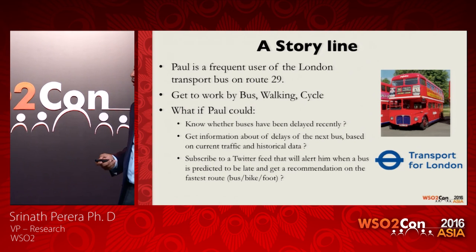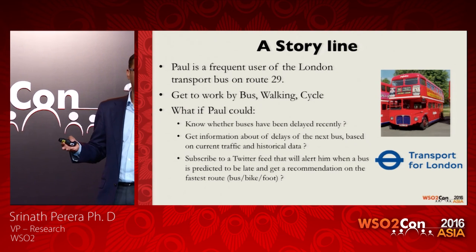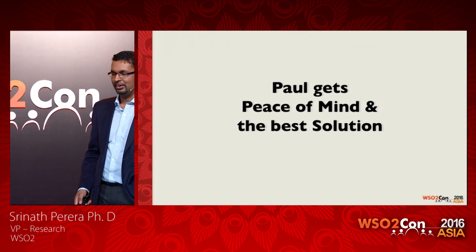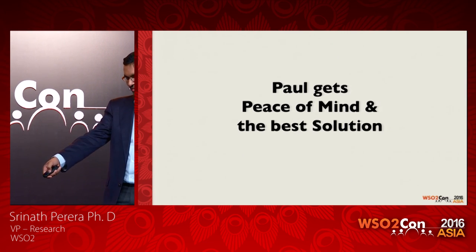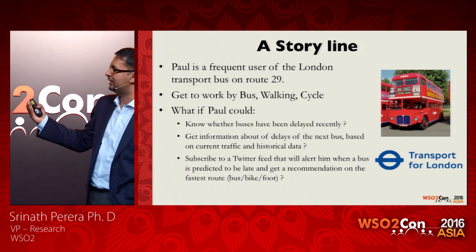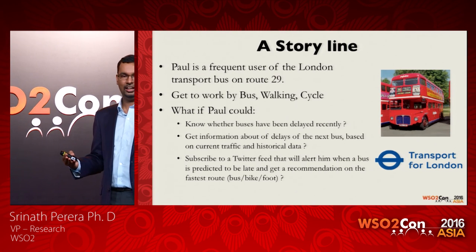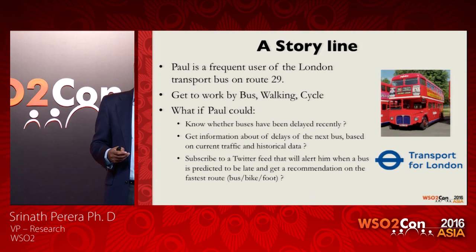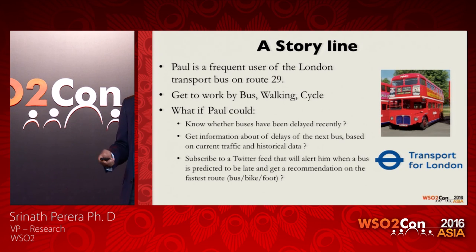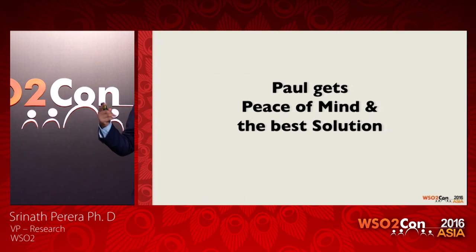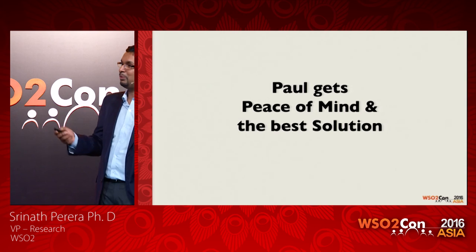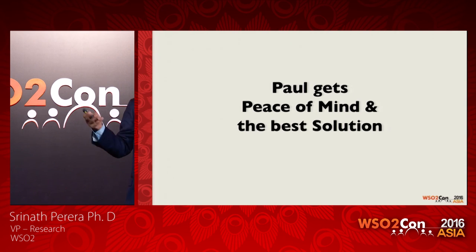This is a demo we did for analyst demos. The idea is that if you have a system that would tell you what to do — tell you what's the state, is the bus coming close by, or is it better to cycle now — such a system will give Paul peace of mind. He can do more useful things rather than worrying, and most importantly he still has the optimal solution.